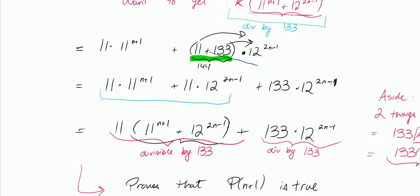This is a common type of exam question. The key concept is to expand a coefficient into two adding terms and then factor them, so you get two or more expressions that are each divisible by the number you want to divide by.